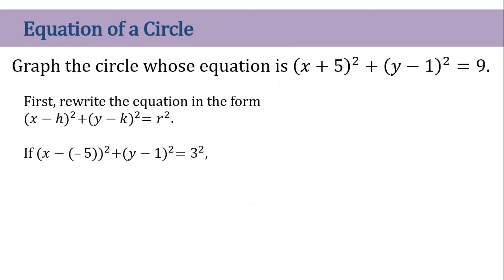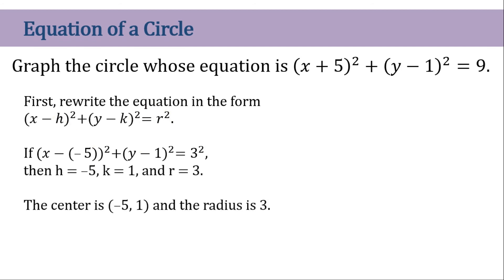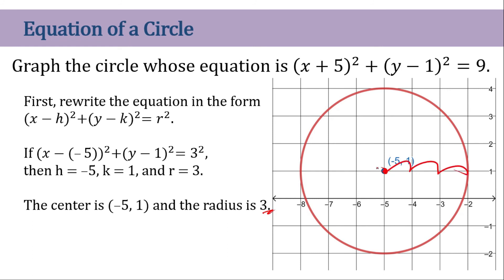Another example. Here h equals negative 5, k equals 1, and r equals 3. So the center is (-5, 1) and the radius is 3. Locate (-5, 1) on the plane and then count 3 units in all directions, then use your compass to sketch the circle.